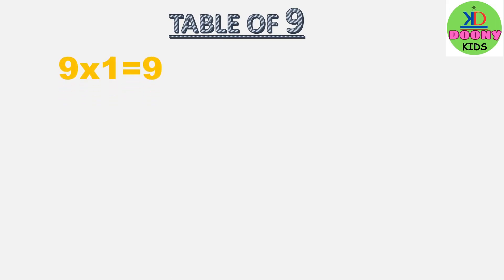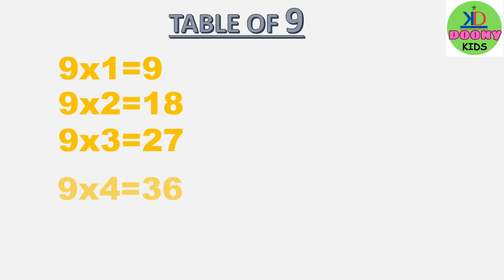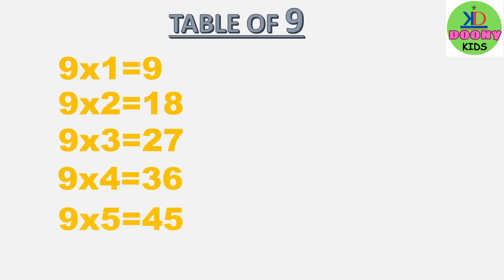Table of 9. 9 ones are 9, 9 twos are 18, 9 threes are 27, 9 fours are 36, 9 fives are 45.